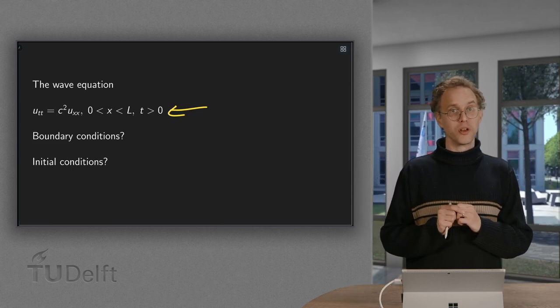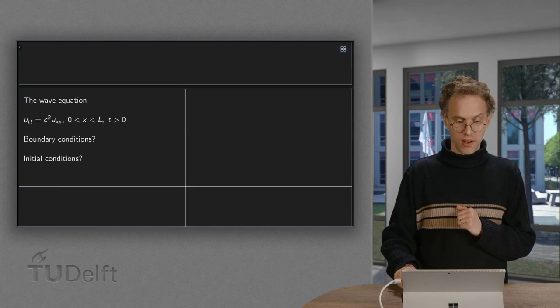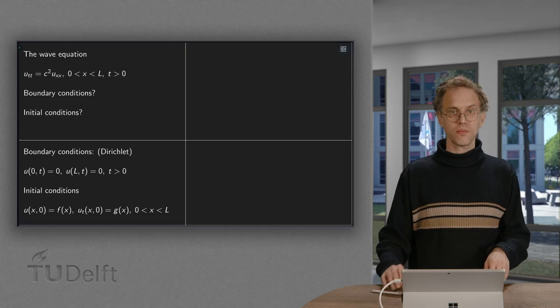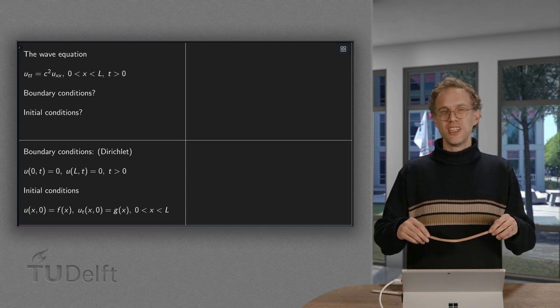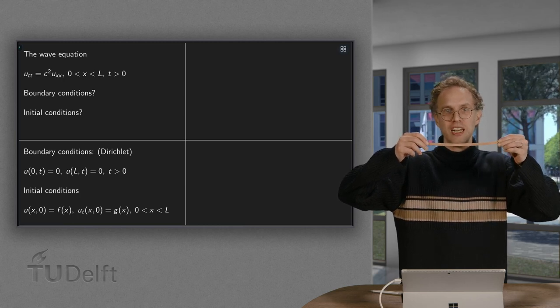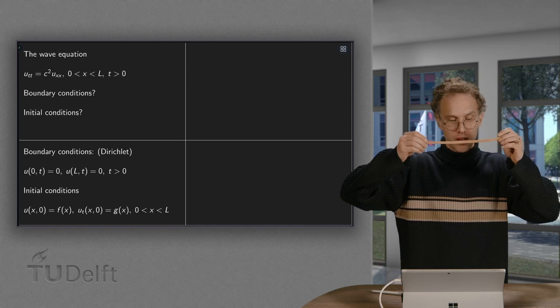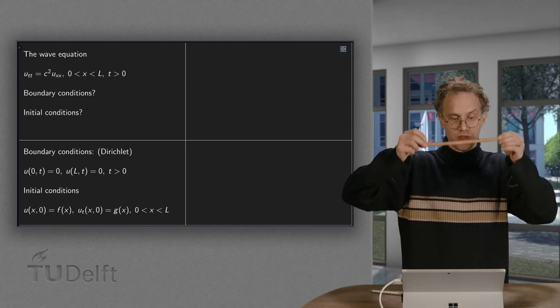And what we need, of course, is boundary conditions and initial conditions. So how many do we need? Well, boundary conditions, if you think of the example we were looking at, are quite obvious. Like you want to fix your u at x equals 0 and x equals L to 0.